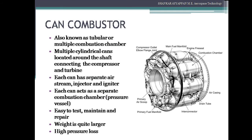Can combustors are also known as tubular combustors, where we have multiple cylindrical cans spaced around the space between the compressor and turbine. These cans have separate air streams, injectors, and igniters, where each can is a separate combustion chamber or pressure vessel where the combustion process takes place. The separately combusted products then go to the main stream to the turbine by means of an exhaust diffuser. The advantages of can combustors are that they are easy to test — since each can is a separate combustion chamber, it can be individually tested and maintained. If there is a problem, the can can be removed and repaired separately. The disadvantages are higher pressure loss and the weight is larger compared to other types.